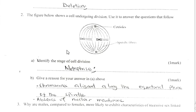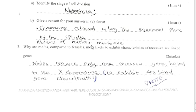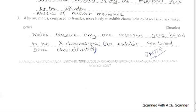Question 2: The figure below shows a cell undergoing division. Identify the cell, the stage of cell division — that is metaphase — and give a reason. The reason is that the chromosomes are aligned at the equator of the spindle fibers and the nuclear membrane is absent.